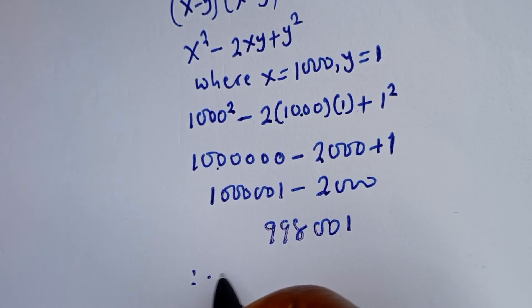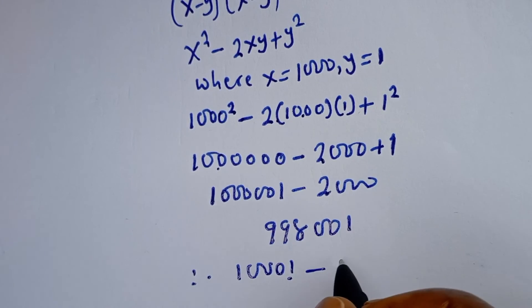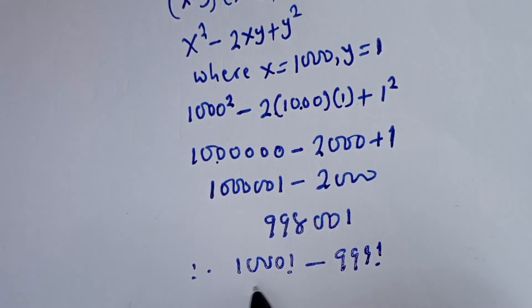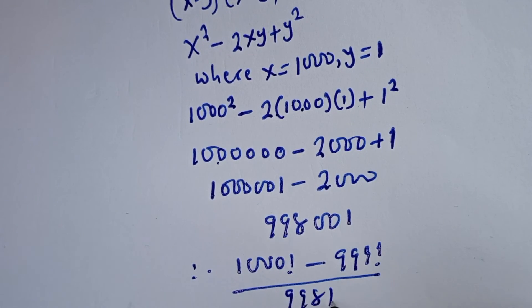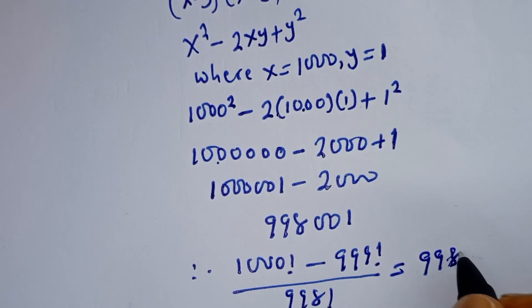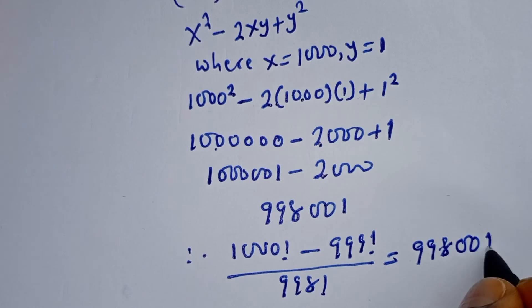Therefore, 1000 factorial minus 999 factorial divided by 998 factorial is equal to 998001.